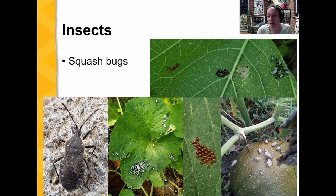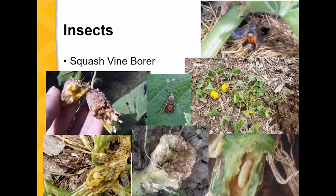Squash bugs are not only causing damage on the leaves — they can completely kill plants. They can also be on the fruit and cause damage there too. Another one that I really dislike is the squash vine borer. The adult is this little pretty moth, but if you see this flying around, you better beware. They lay their eggs at the base of the stem, those larvae hatch and are inside the stem, and they disrupt the flow of water and nutrients.